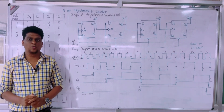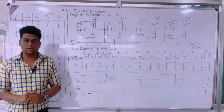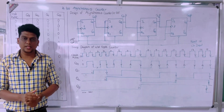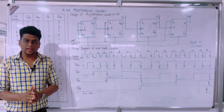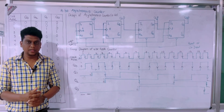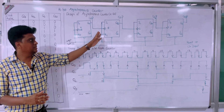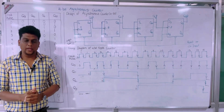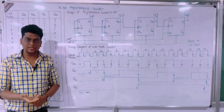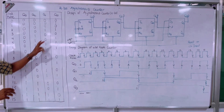Welcome to this video on asynchronous counters. We are going to design a 4-bit asynchronous counter. As already discussed, counters are of two types: synchronous and asynchronous. In asynchronous, there is no separate clock pulse — the output of the first flip-flop is driven as the clock of the next flip-flop, and the clock pulse is not given in a simultaneous manner.